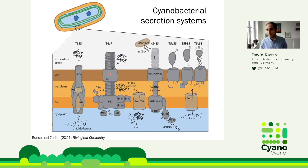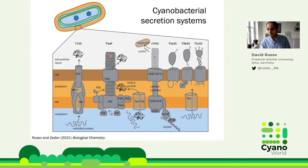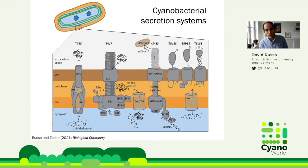Then we have the T4P — the Type 4 pilus — which many people are working on: Anagret, Conrad, Rakefet, and many Japanese groups. The T4P is a very complex structure spanning both membranes, incorporating PilA1 which polymerizes into a pilus extending out of the cell. Then there are conjugation systems, also functioning as protein secretion systems — the T4SS — which don't normally exist in typical lab pets like Synechocystis or Synechococcus, but are common in more complex cyanobacteria.